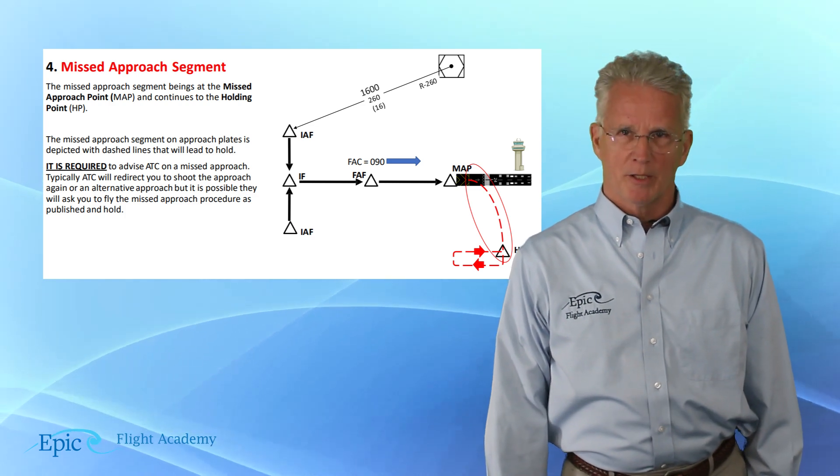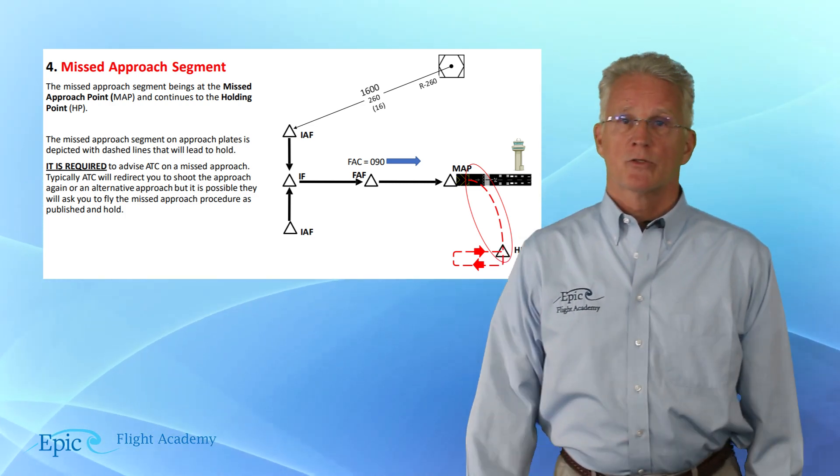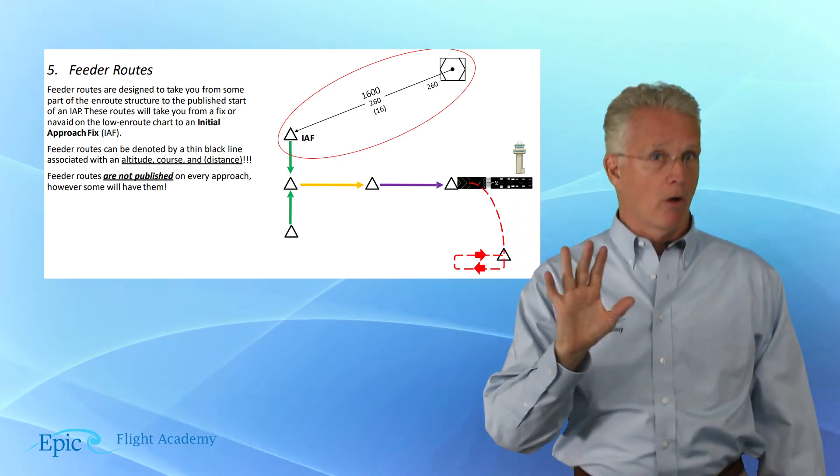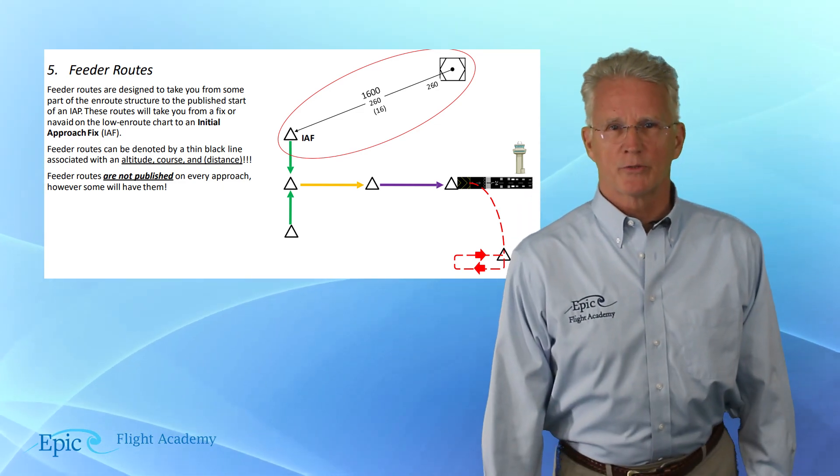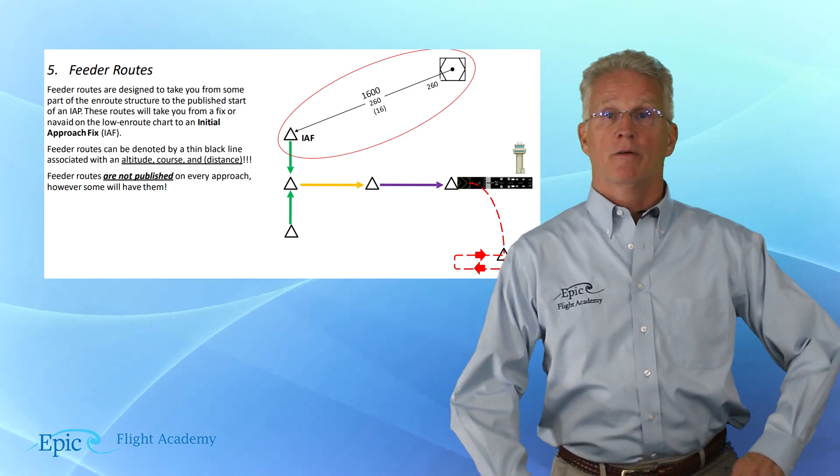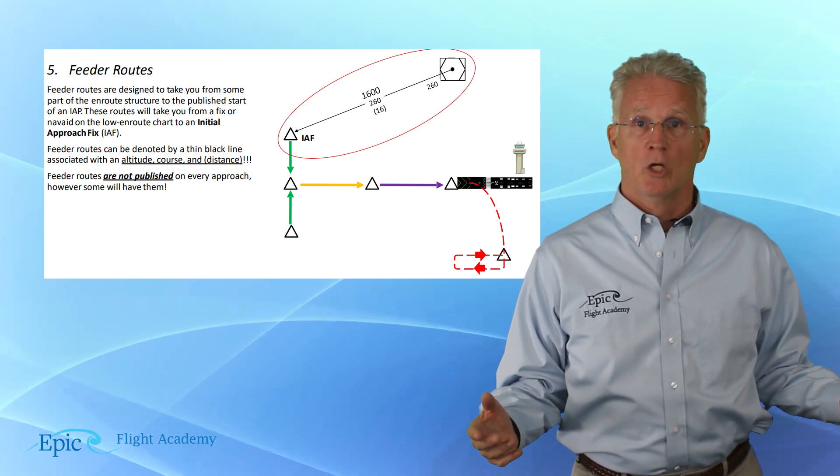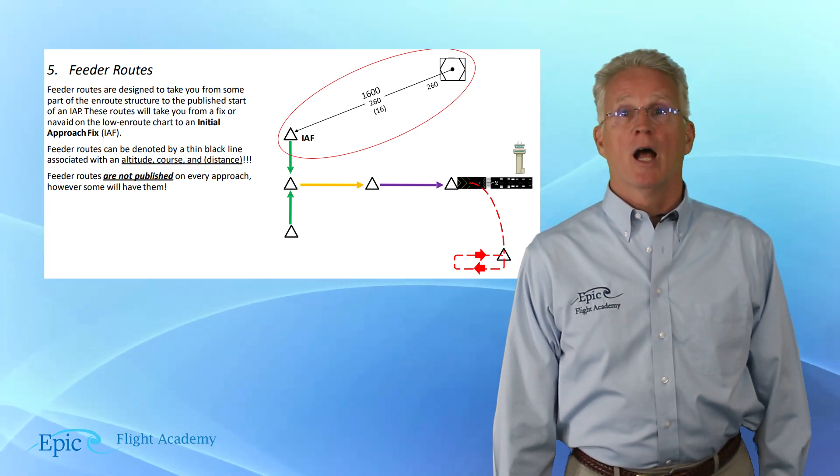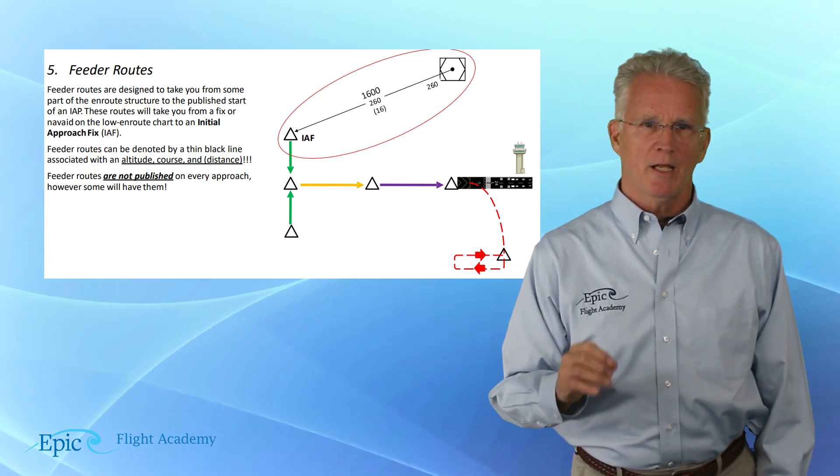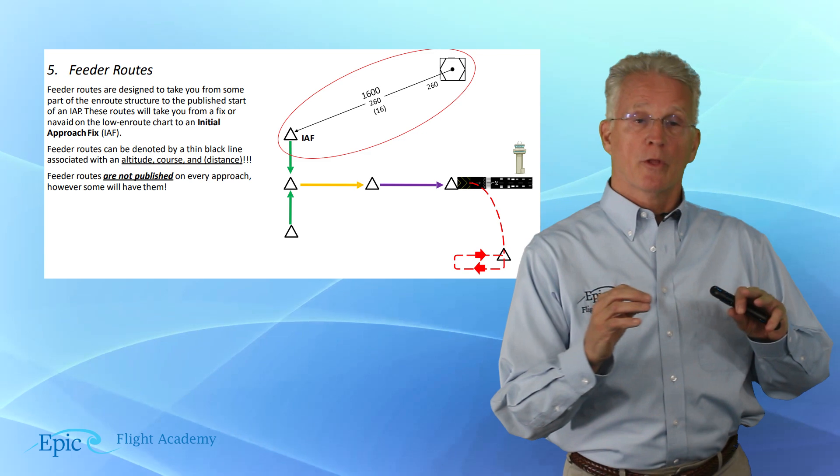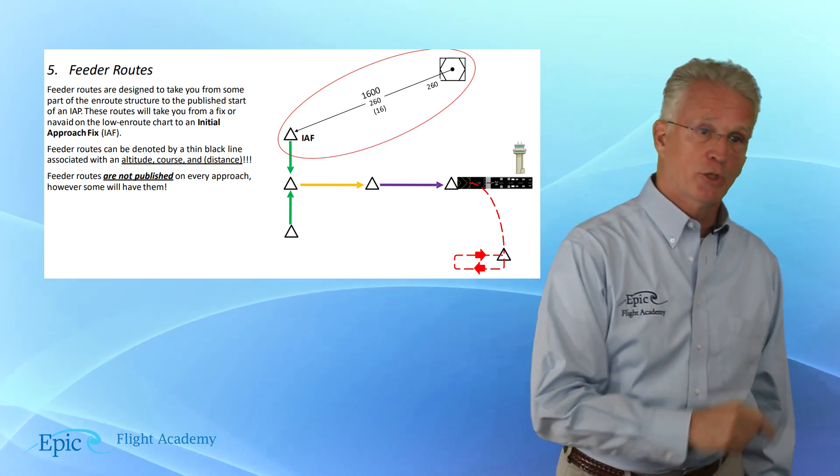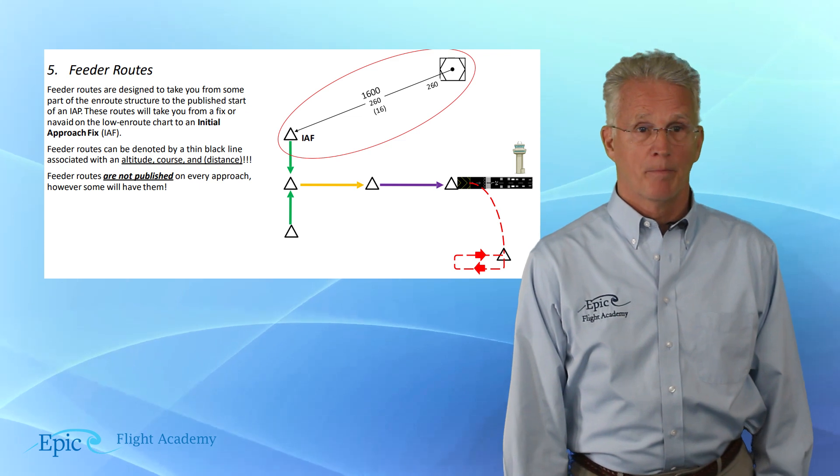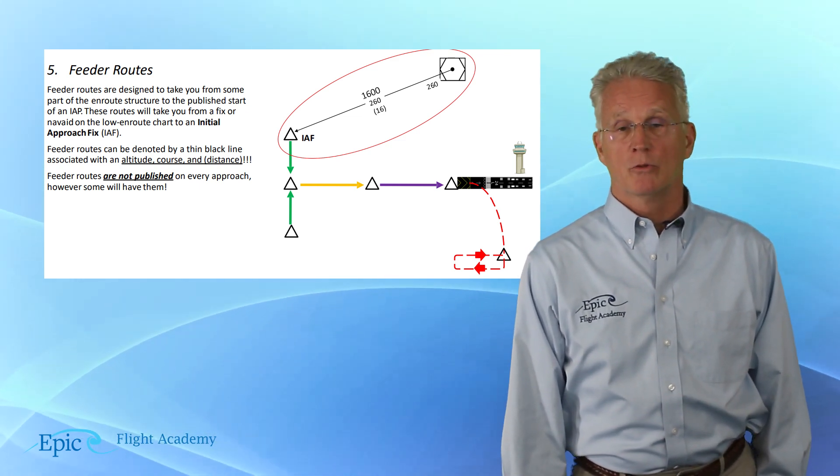The fifth segment of an approach procedure is called feeder routes. Now again, remember, not all approaches have all five segments. Feeder routes are designed to take you from some part of the en-route structure or a STAR to the published start of the IAP, the instrument approach procedure. These routes will take you from a fix or NAVAID on the low en-route chart to an initial approach fix.